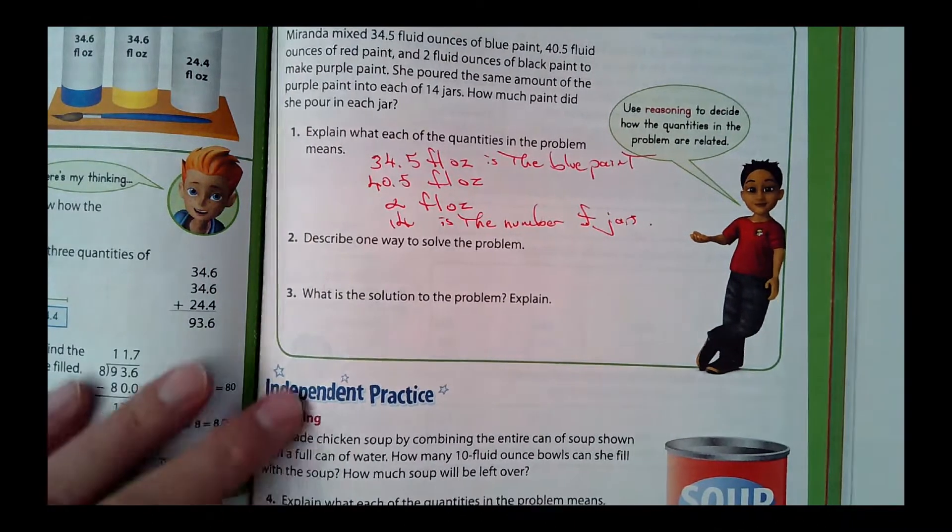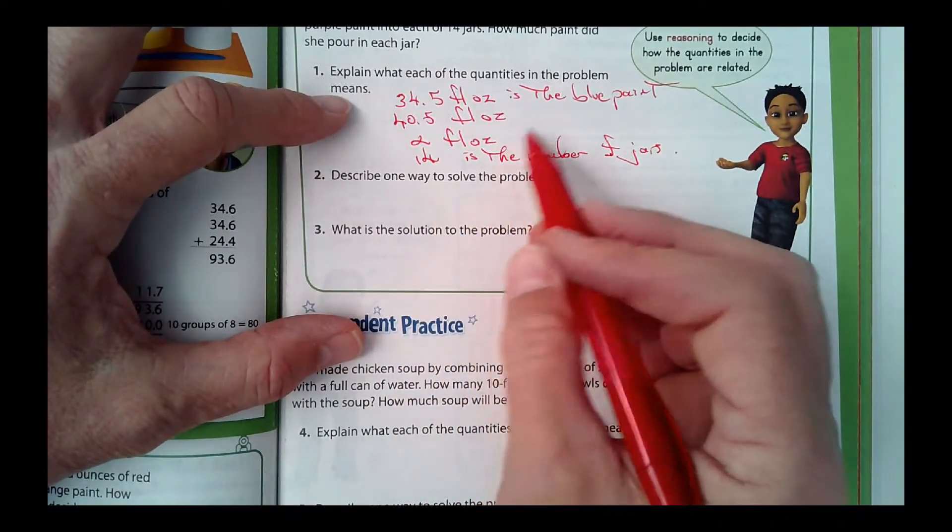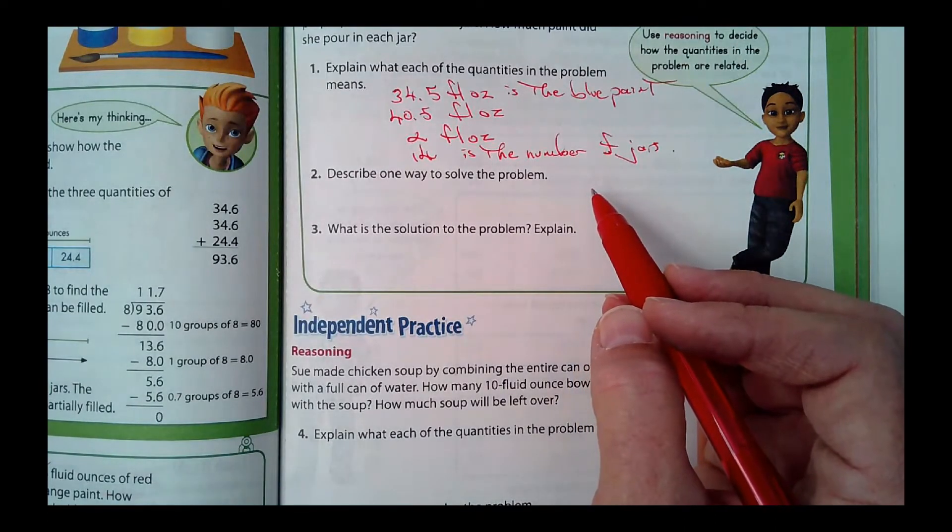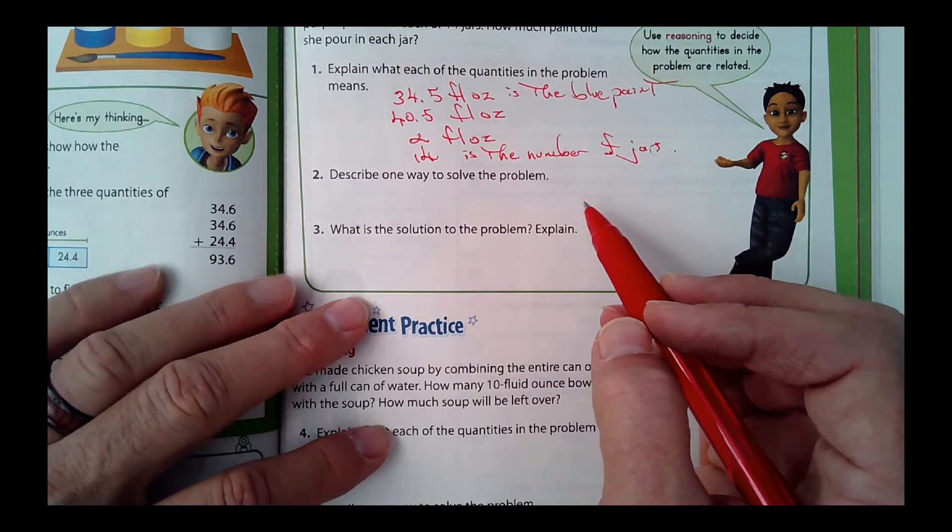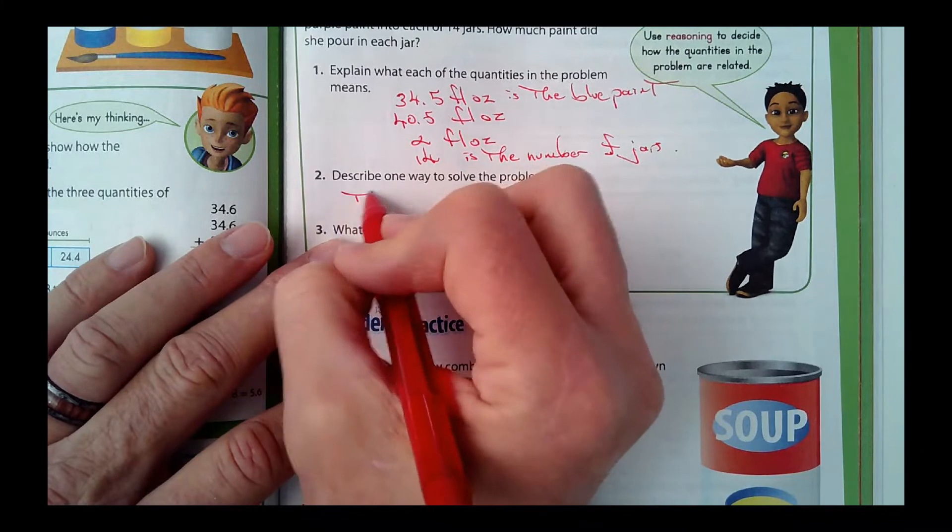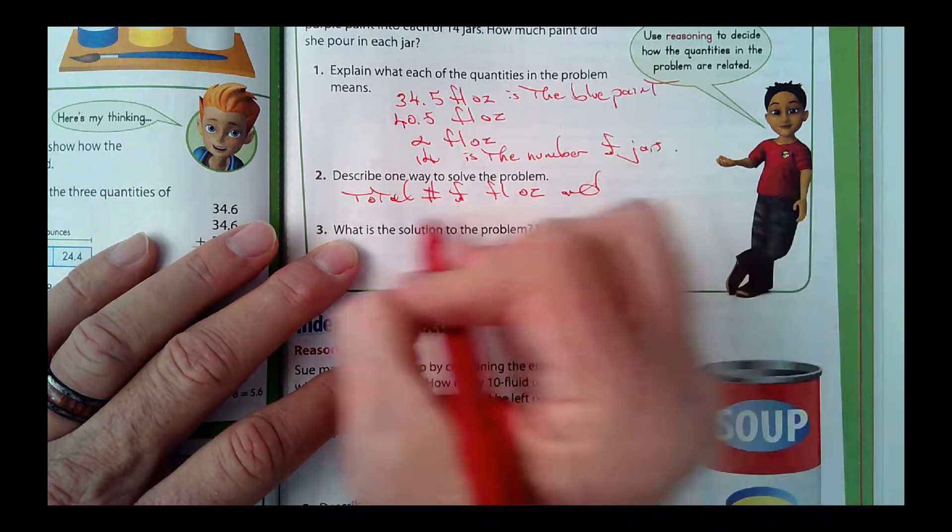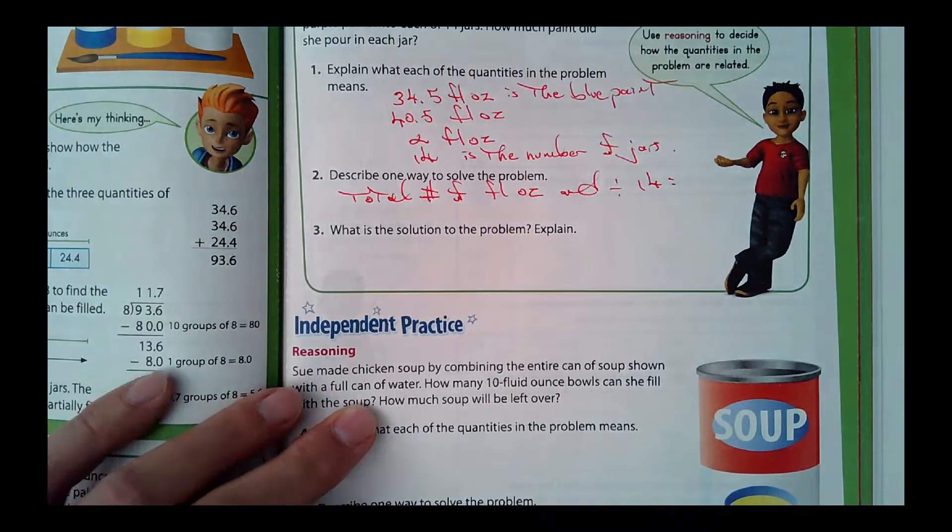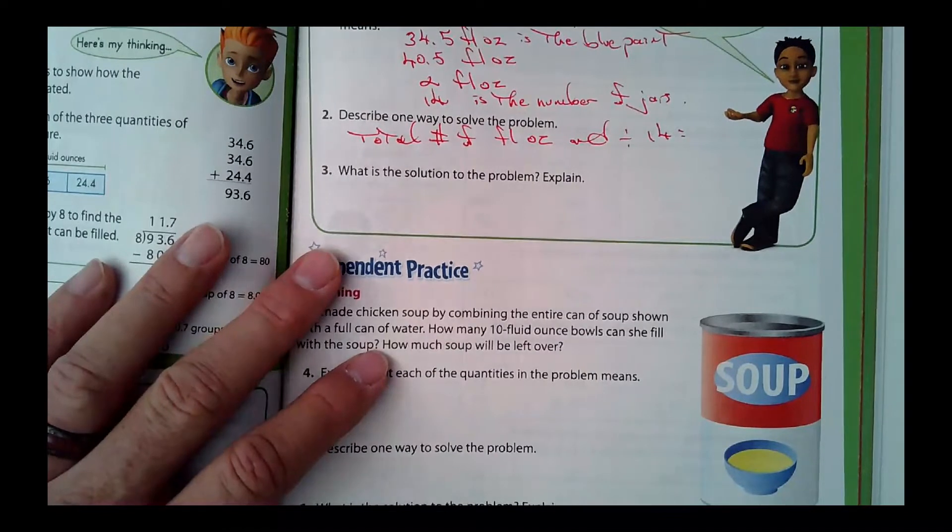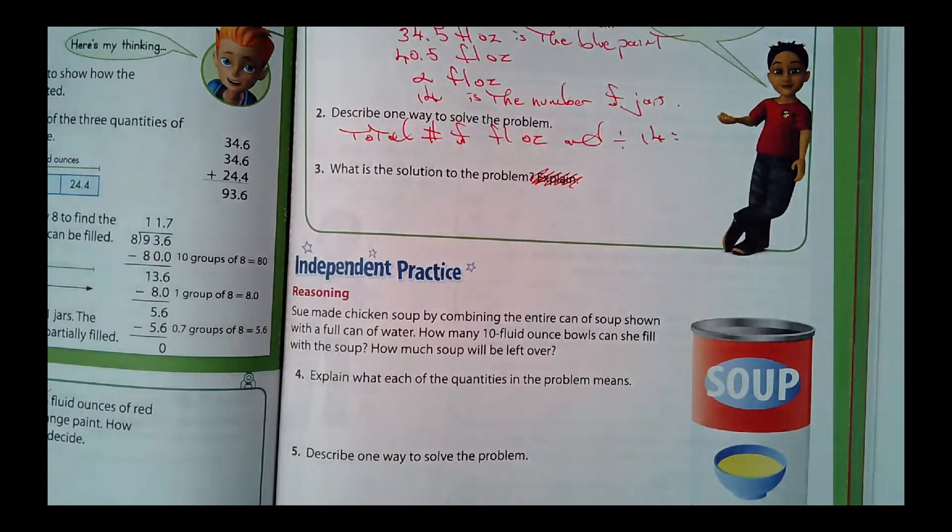It says describe one way to solve the problem. Well, there's more than one way to solve this problem, but I would total the number of fluid ounces and then divide that by what? What would you divide that by, Mr. Andreessen? You would divide that by 14. Yeah, by 14. So you would total the number of fluid ounces and divide by 14. That would tell you how many ounces would go in each of the 14 jars. What is the solution to the problem? I'll put the answer down there. I'm not going to worry about you explaining it because we've been going through the steps on how to solve it, so I already know you know how to explain it.